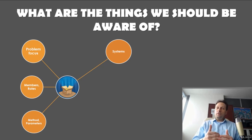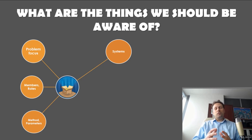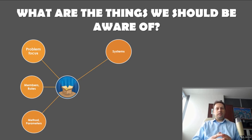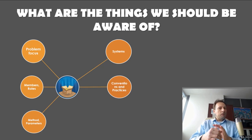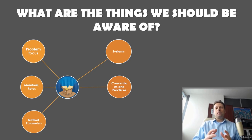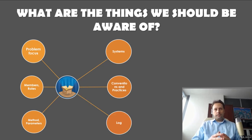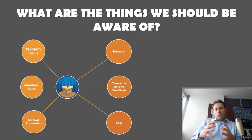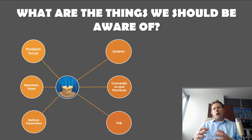The Agile Manifesto says that individual interactions are more important than processes and tools, and that's certainly important. But any scrum team is going to have some tools and methods they use, so just be explicit about these conventions and practices — for code reviews, testing, and things like that. Finally, keep a log: it's a good idea to keep notes about your scrum retrospectives so you can keep an eye on what decisions you're making and how you are improving over time.